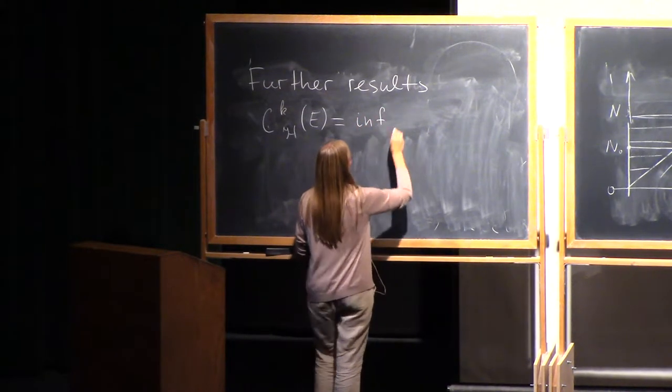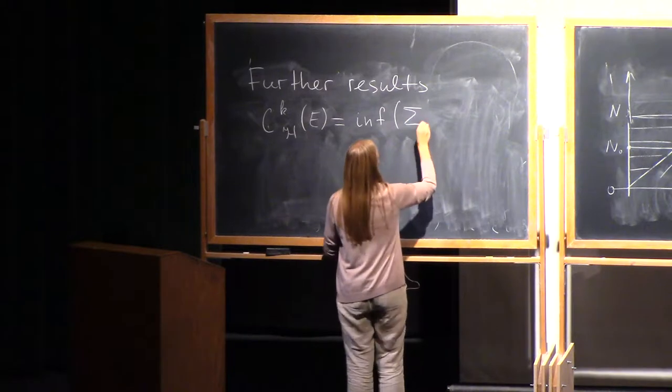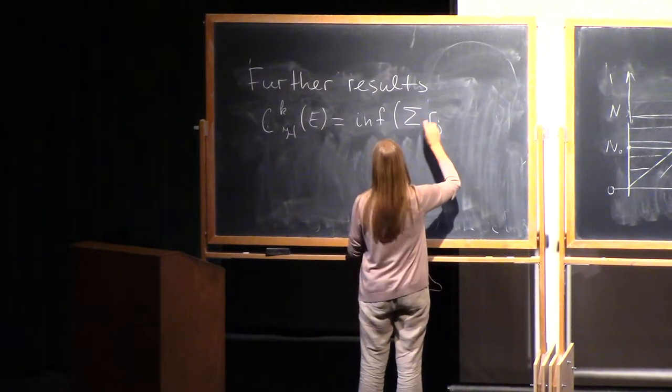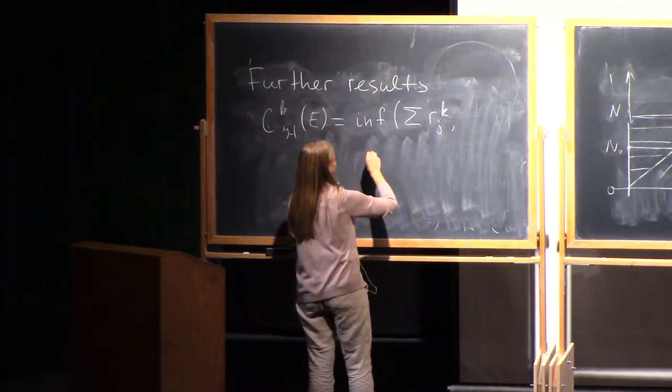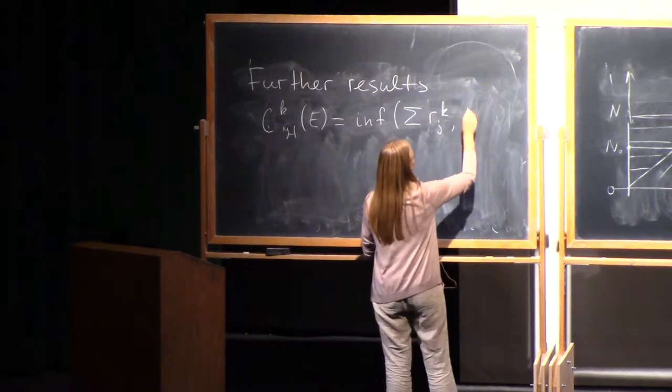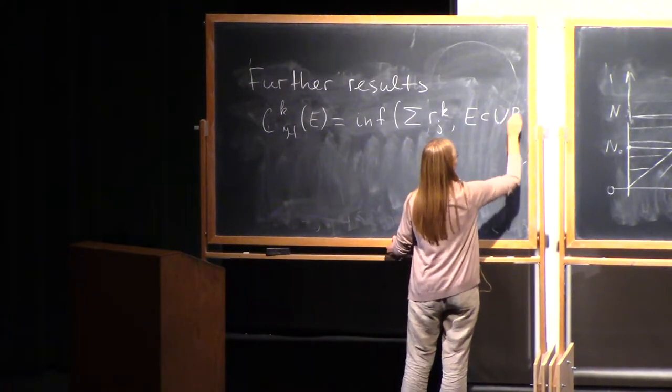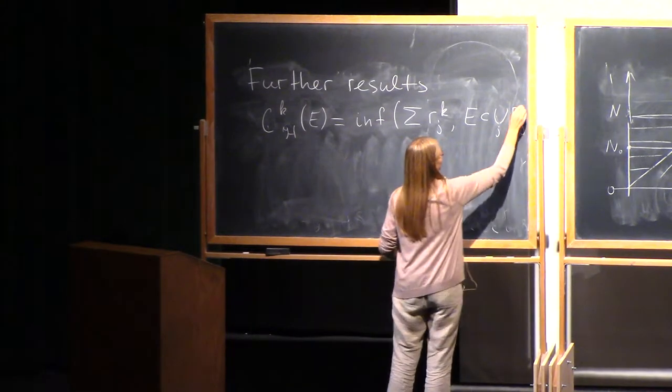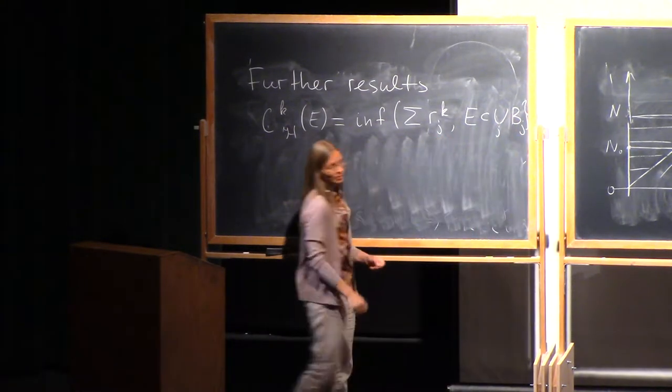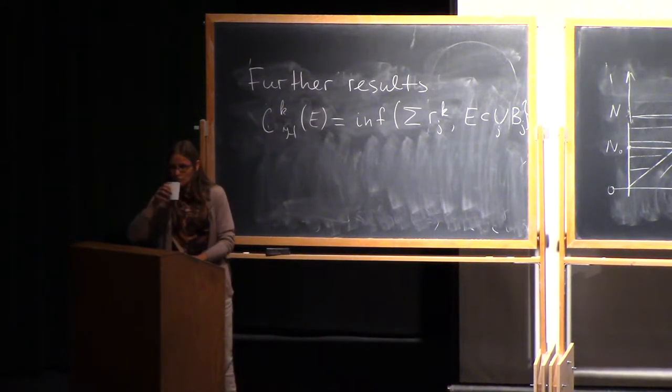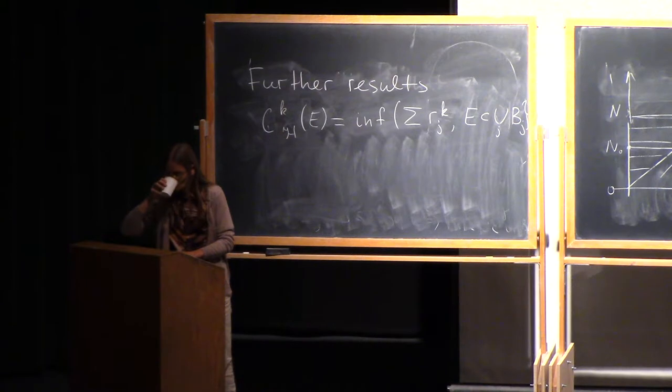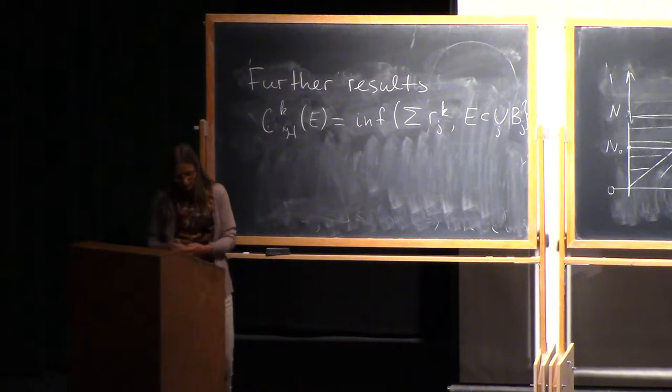It's infimum of the sum of the radii to the power k, if I take my set E and cover it by balls of radius r_j. k is the dimension.